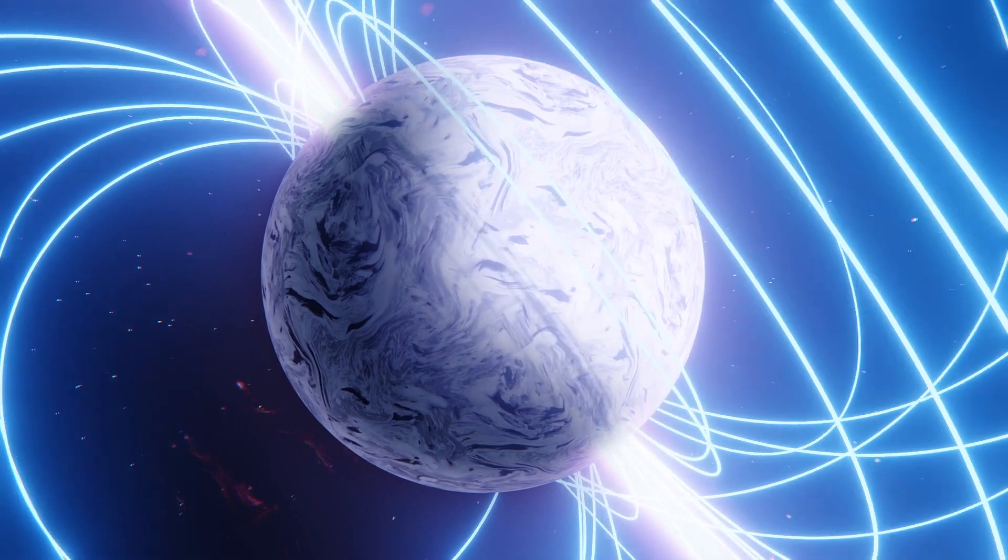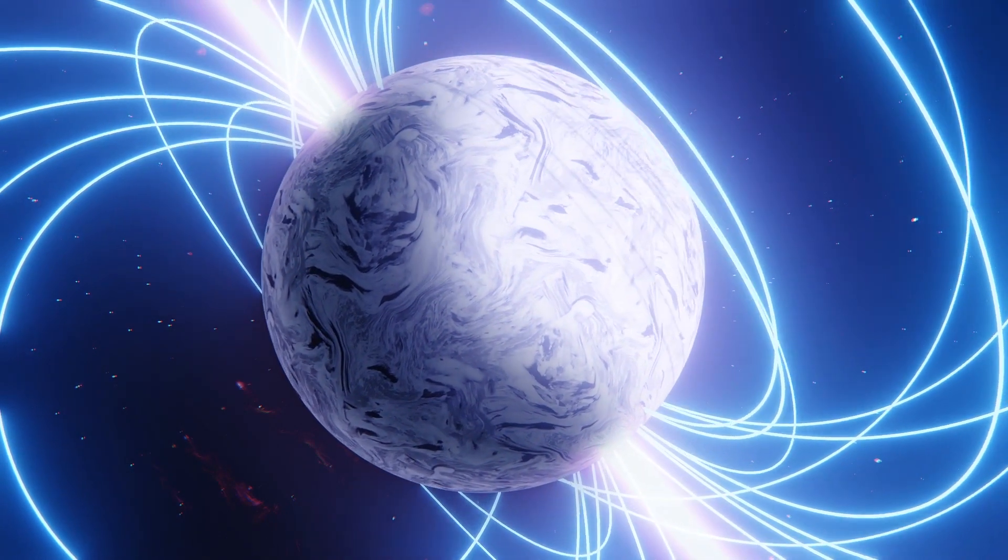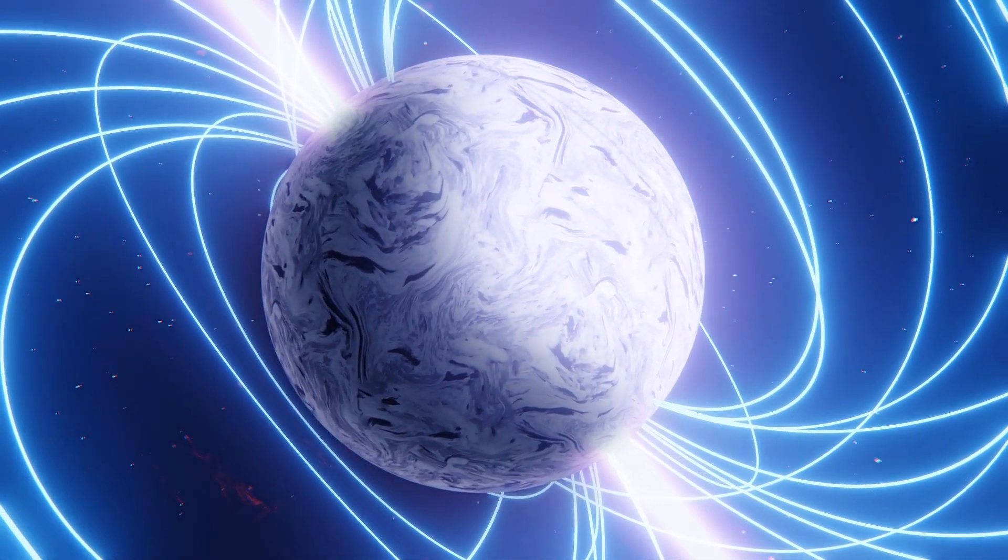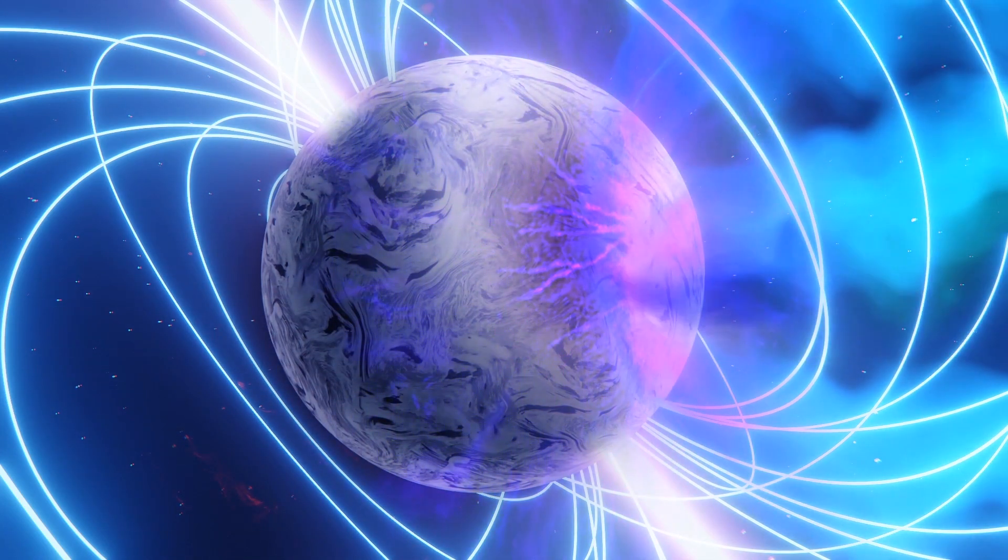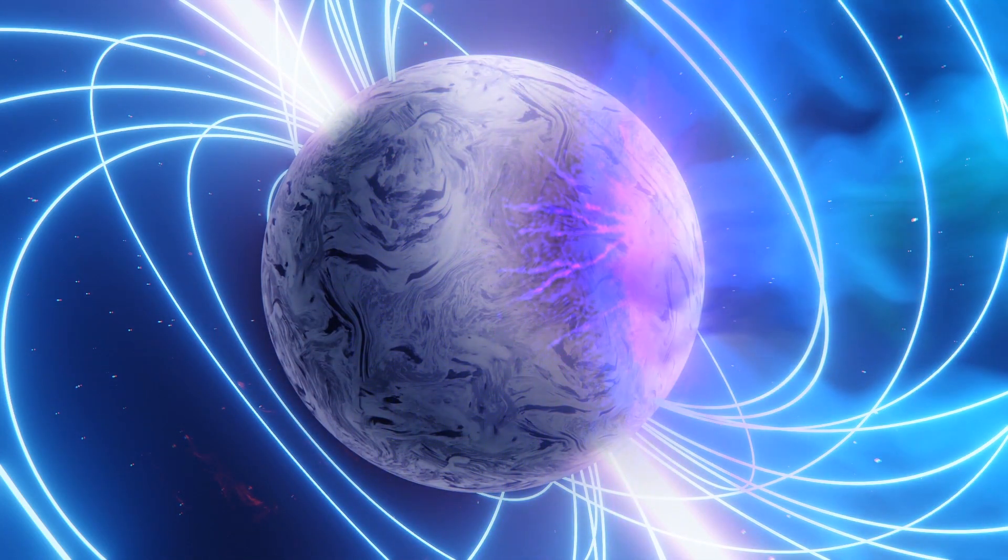According to one theory, magnetars might be able to power fast radio bursts by releasing flares of energy in a starquake caused by the huge stresses exerted on the magnetar as its magnetic fields twist and snap back in place.